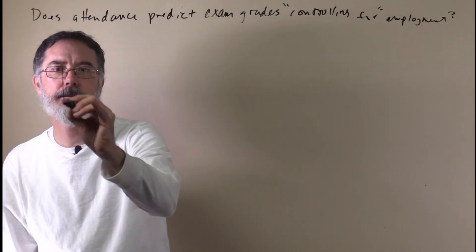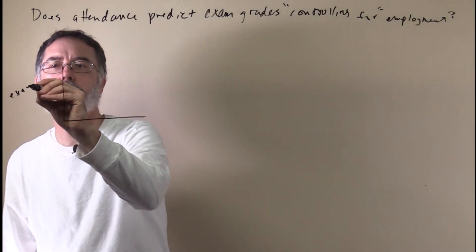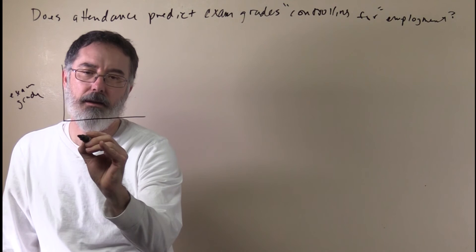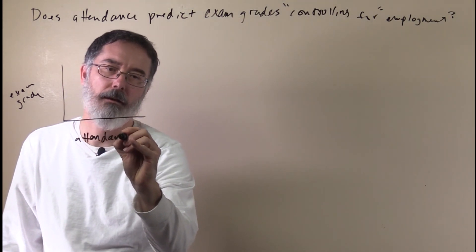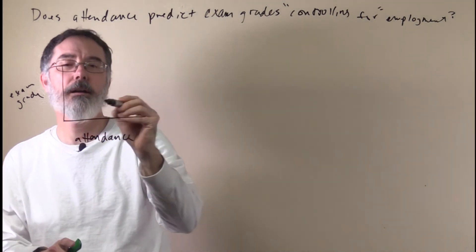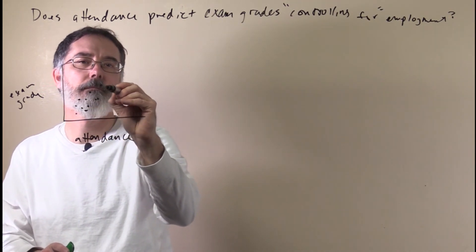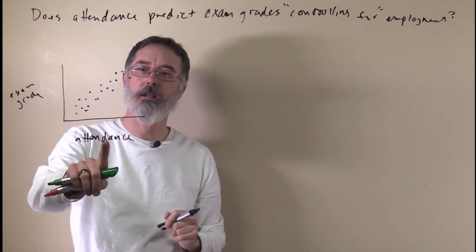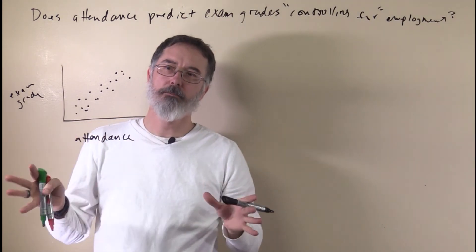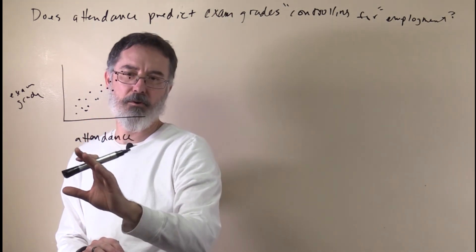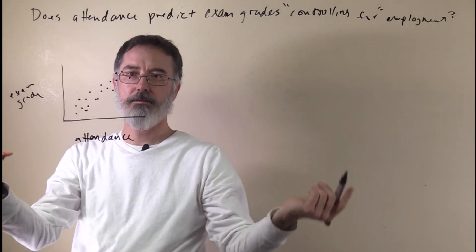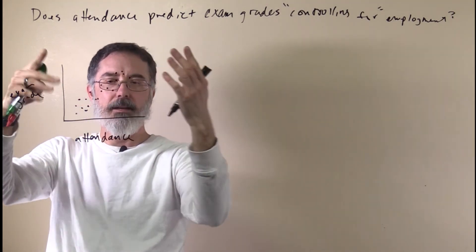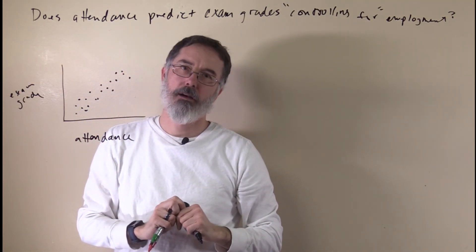Let's say we collect our data, and we have people's exam grades and their attendance, and we do the scatter plot, and it looks something like this. There is a strong positive correlation between attendance and exam grade. If we do a simple regression, we would be able to predict exam grade based on somebody's attendance, and given the consistency in the data, it would probably be a pretty accurate prediction.